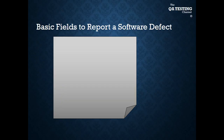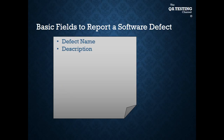The basic fields to report a software defect are: defect name, which is a short name of what the defect is about; the description, where we use a paragraph to describe what is going on with the defect; and environment, which covers the operating system we are using, the hardware, and all the stuff related to the environment.